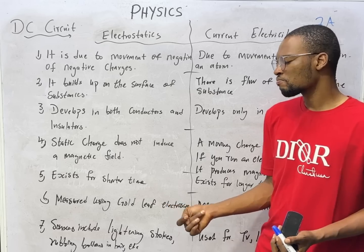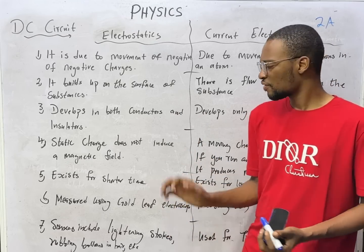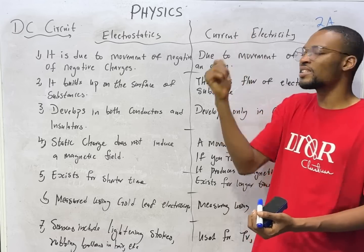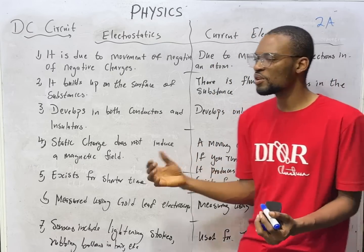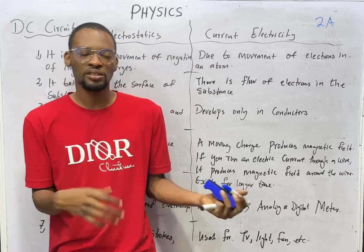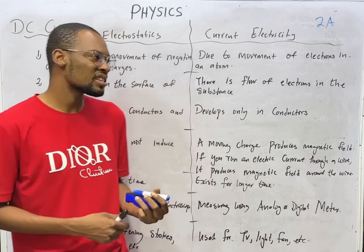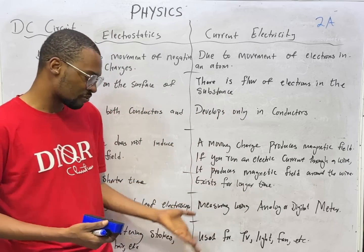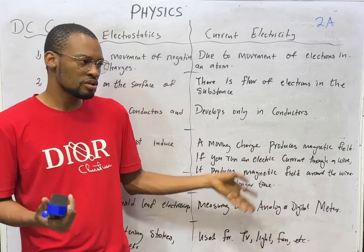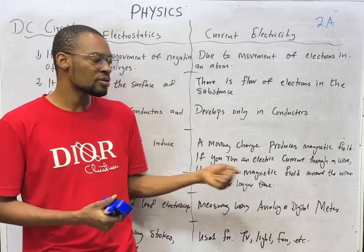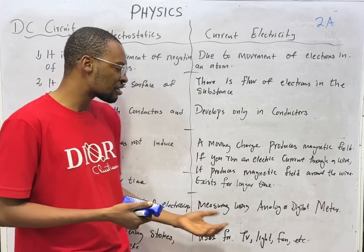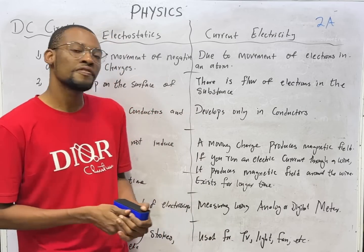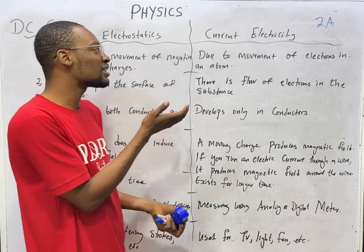Electrostatic electricity can be produced from lightning, rubbing balloons, combing hair, or using charged rods. Current electricity can come from a battery or an AC source such as a generation station or wall socket, and is used to power your TV, lights, fan, and other appliances.